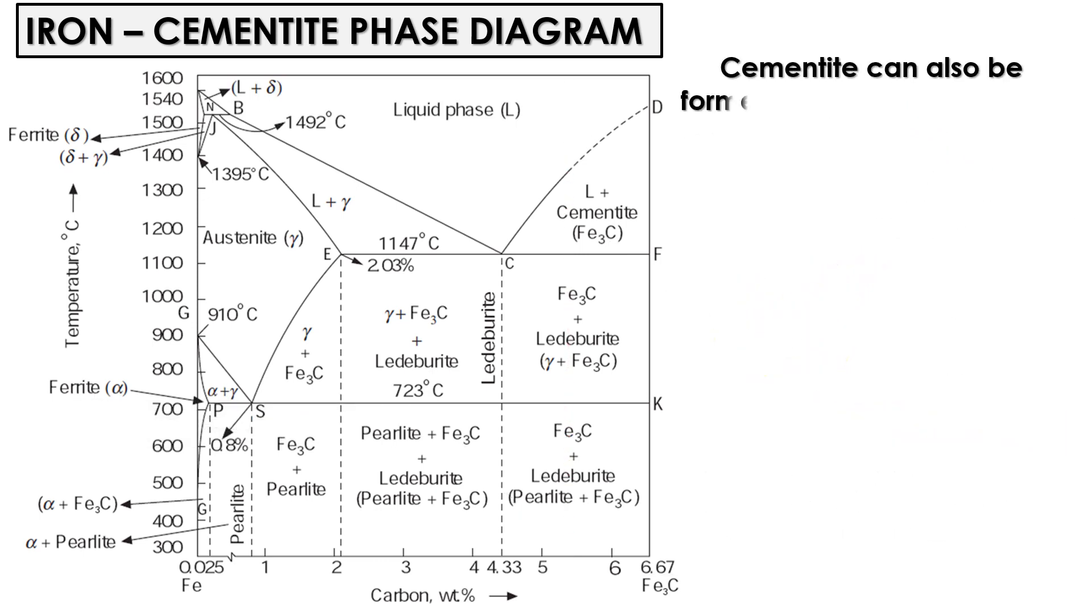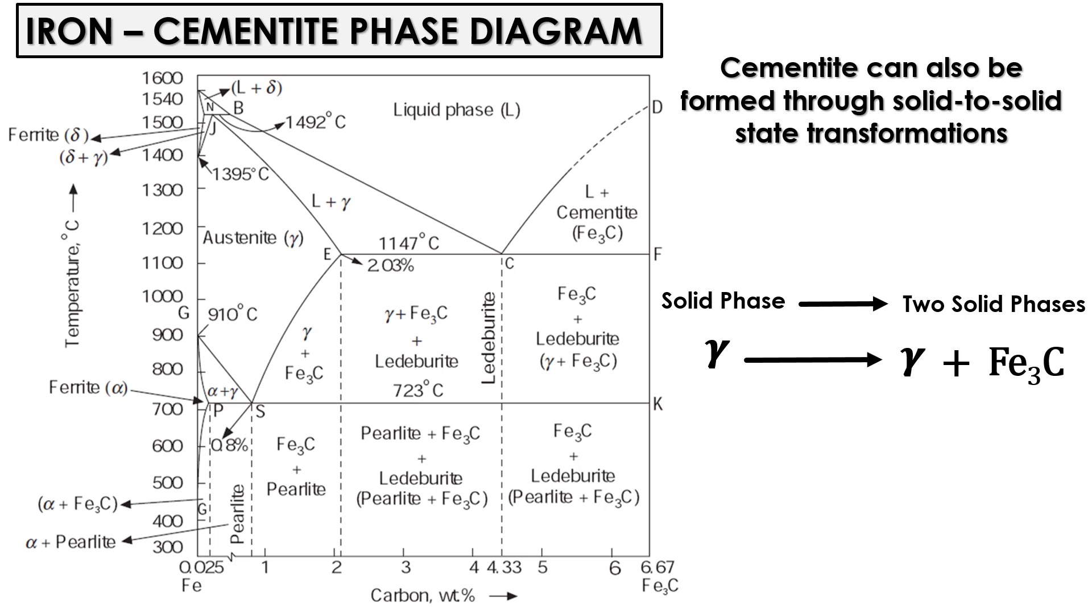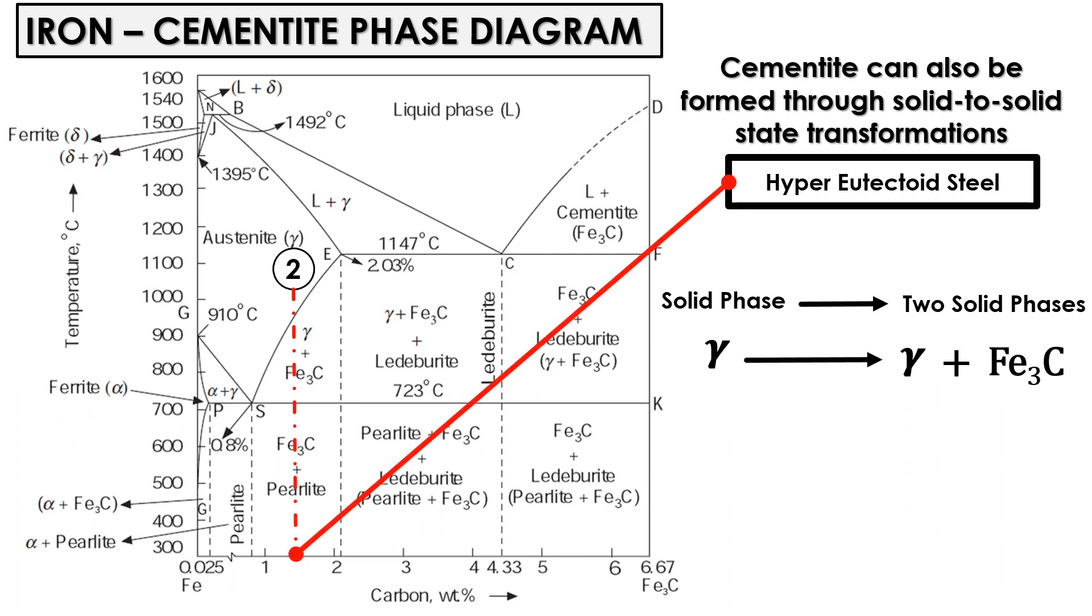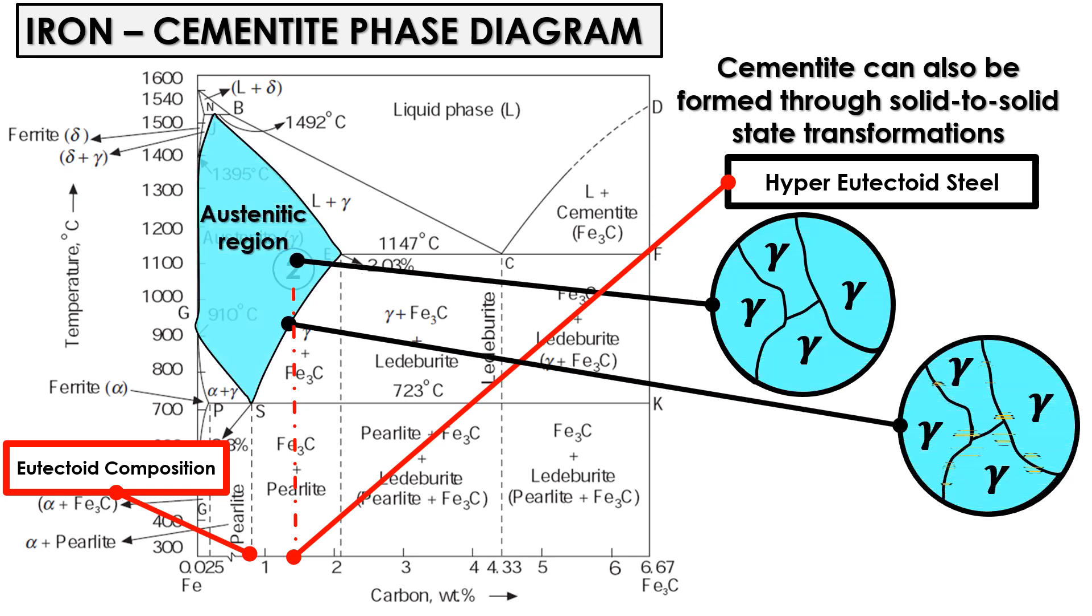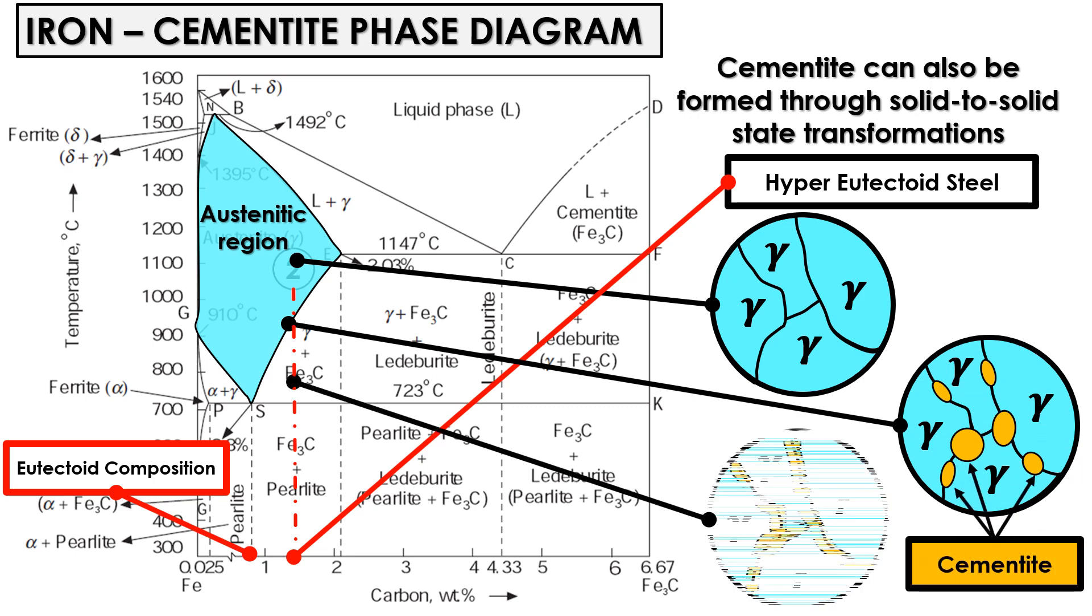Similarly, cementite can also be formed through solid to solid state transformations where one solid phase transforms into another without involving any liquid phase. Let's consider the example of hyper-eutectoid steel with a carbon content above the eutectoid composition. When this hyper-eutectoid steel is cooled from the austenitic region, the excess carbon will diffuse and combine with the existing austenite. As a result, cementite networks form, creating interconnected structures within the remaining austenite matrix. This cementite network significantly influences the steel strength and wear resistance.